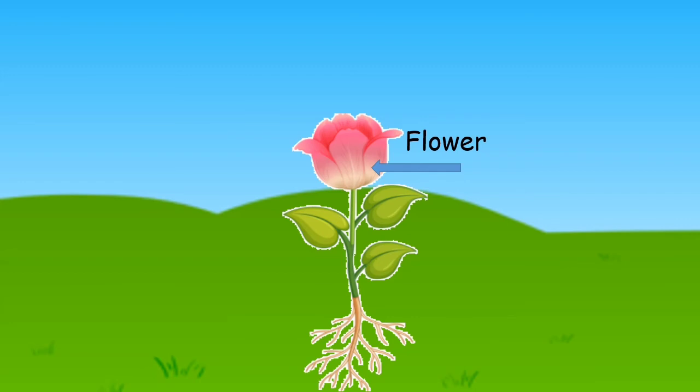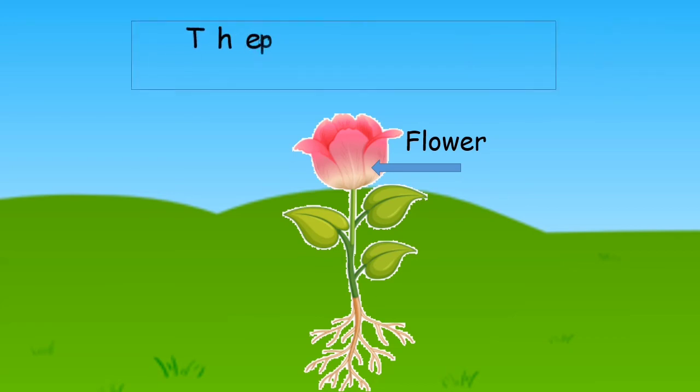The last part is the flower. So what is the function of the flower? The primary purpose of a flower is reproduction. Flowering plants reproduce by seeds.